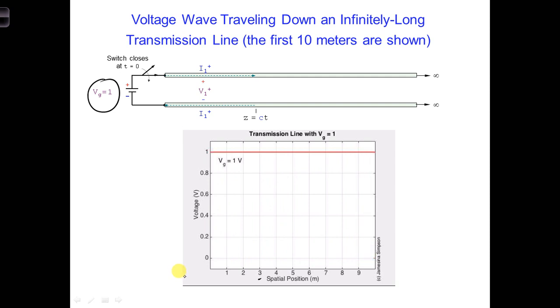You can also see that as the voltage wave propagates, there is no attenuation of the wave, because the transmission line is a lossless transmission line. r' and g' are equal to 0.